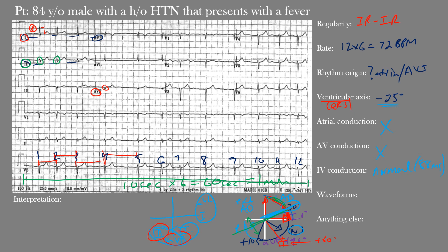In this case we see abnormal Q waves in leads III and AVF — clearly contiguous to each other. For leads outside V2 and V3, the Q waves need to be at least 30 milliseconds wide and at least one millimeter deep. The deep QS complexes visible in lead III and AVF meet this criteria. Remember, 40 milliseconds equals one small box, so these Q waves are slightly less than one small box wide but do satisfy the width requirement, and they exceed one millimeter in depth — confirming they are pathological.